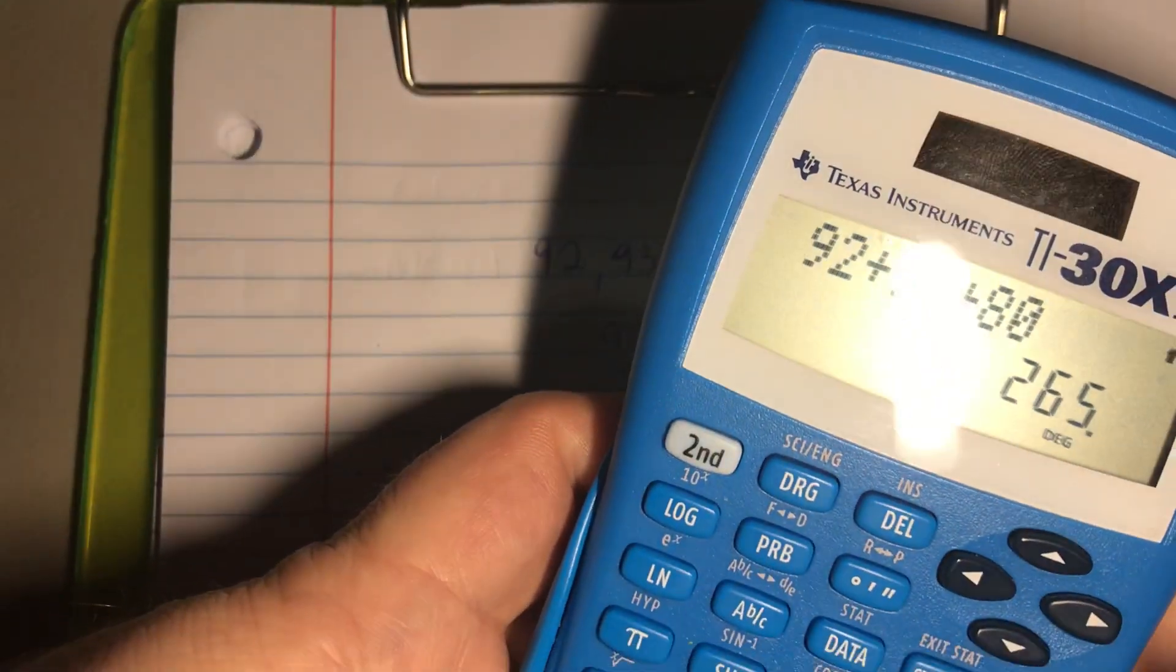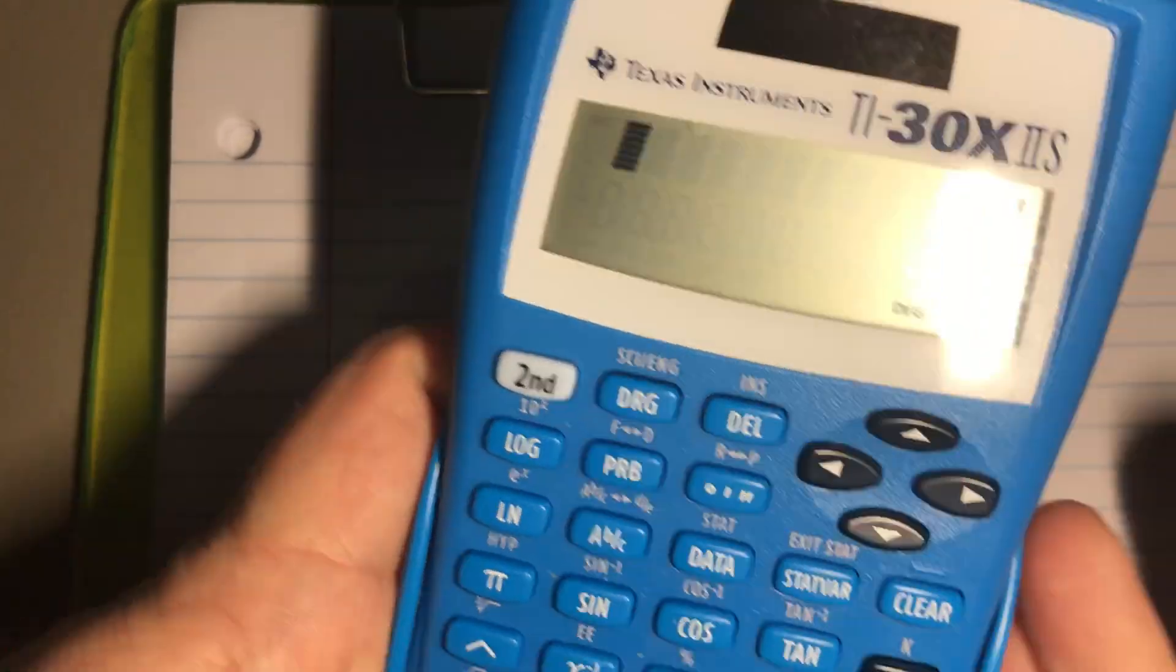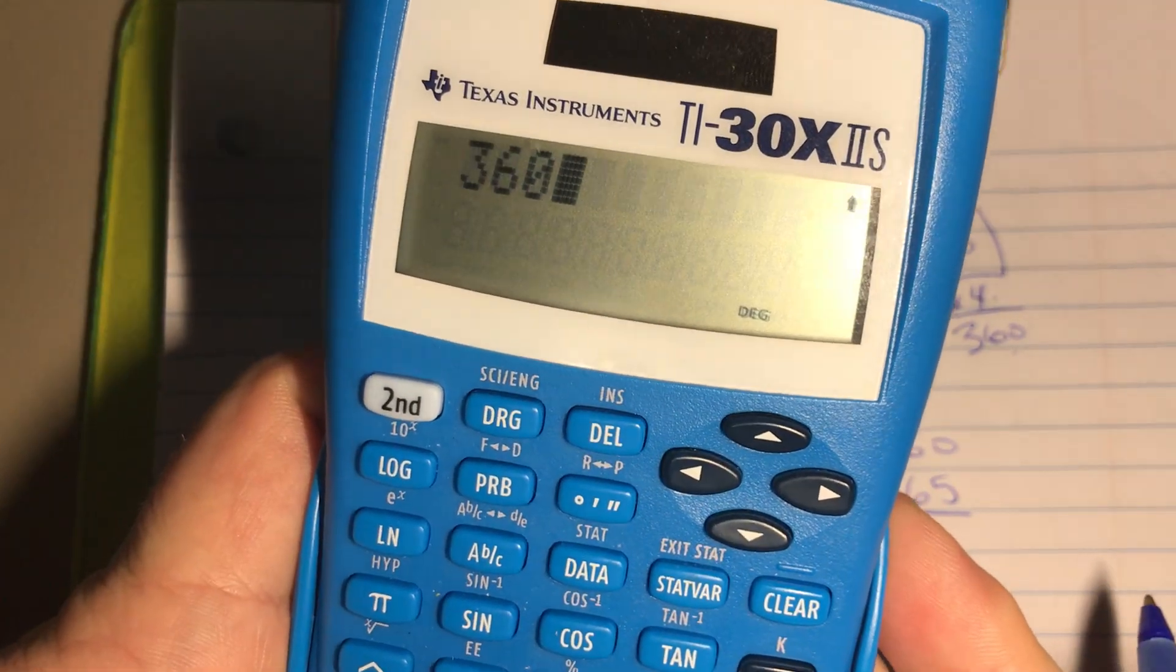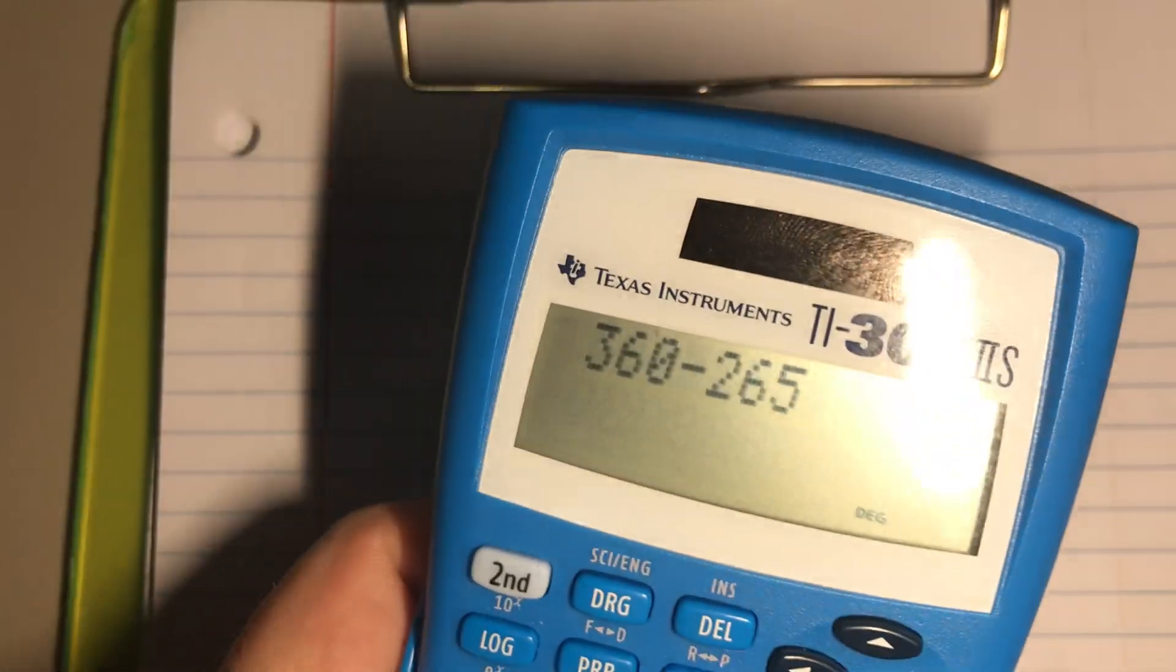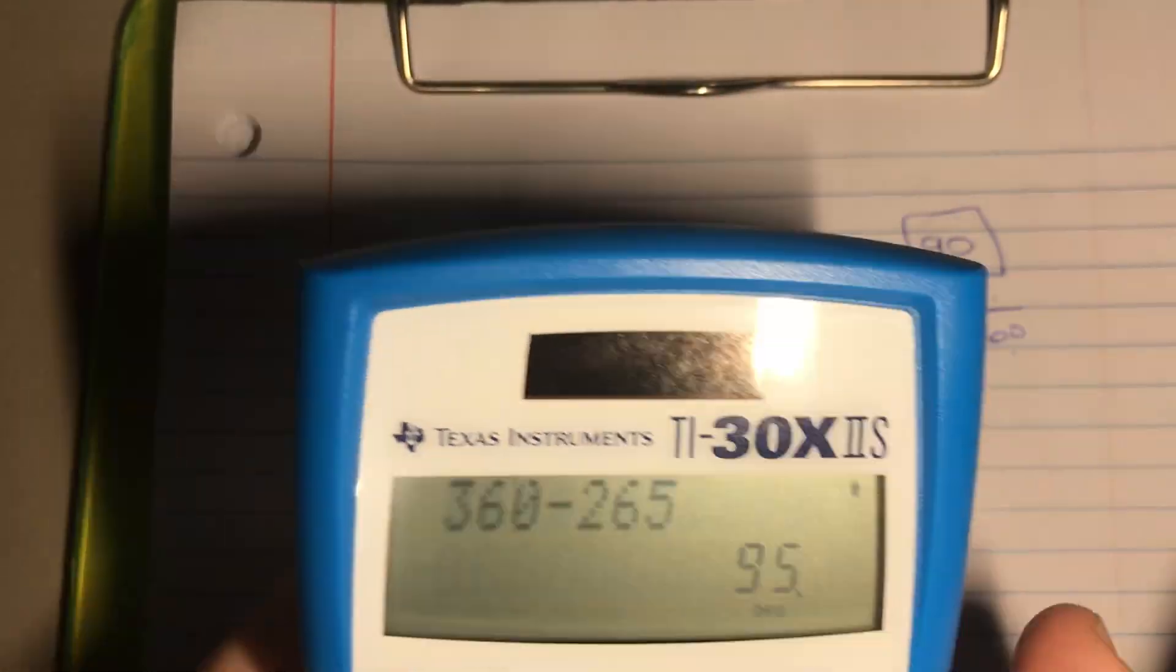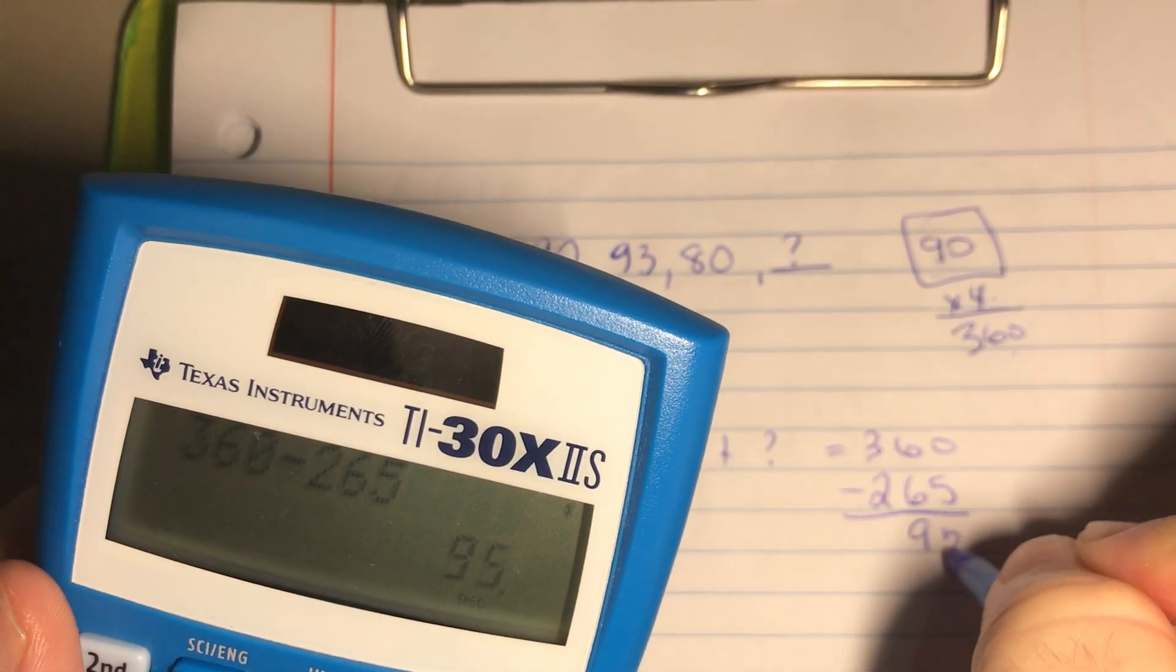Alright, so we grab our calculators and we put 360, and we're subtracting 265. So it looks like on the last test we're going to need to get a 95.